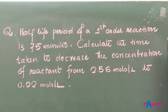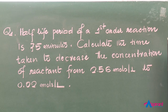Problem 1: The half-life period of a first order reaction is 75 minutes. Calculate the time taken to decrease the concentration of the reactant from 2.56 moles per liter to 0.02 moles per liter.